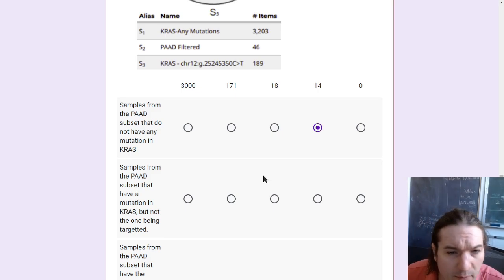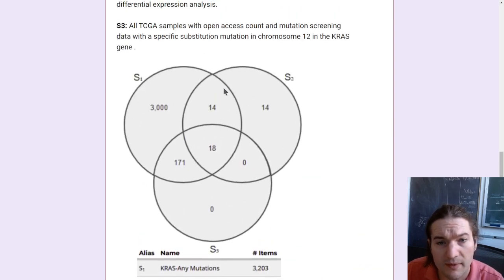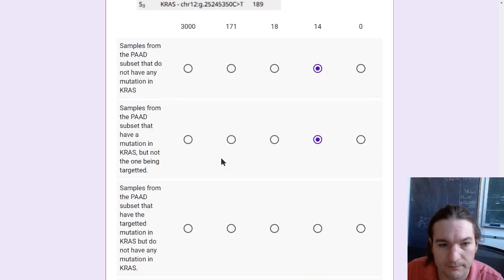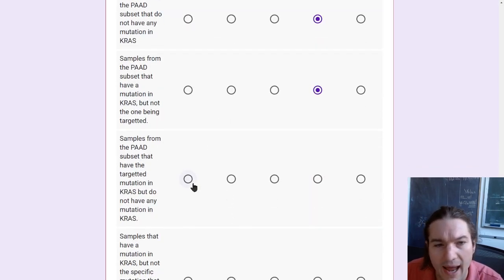Samples from the pad subset that have a mutation in KRAS, but not the one being targeted. That was also a 14. So they're in the pad. They have a mutation, but it's not the one we're targeting. So it's yes one, yes two, not three.